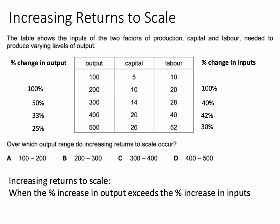The key to this question is to understand increasing returns to scale. They happen when a firm is increasing its factors of production — land, labour and capital — but the percentage increase in output is greater than the percentage increase in input. So we're looking for a combination where the change in output in percentage terms is bigger than the change in inputs.